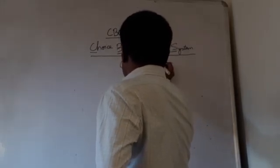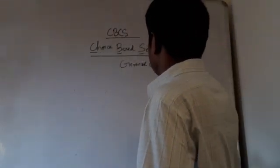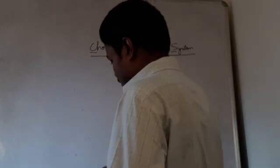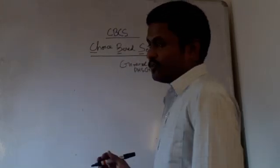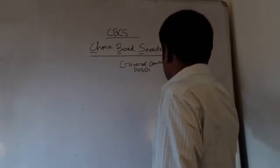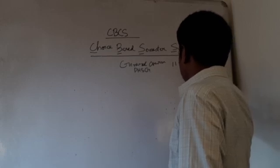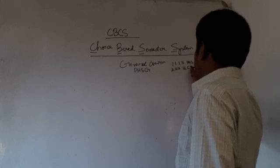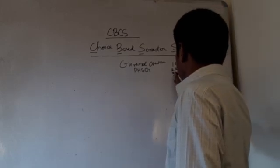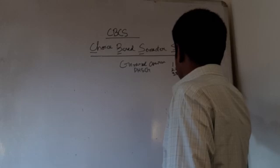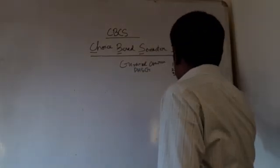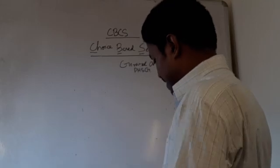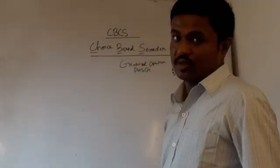The physics general course is denoted by the code PHSG, whereas the honors course is written as PHSA. There is also a number code for each subject: physics has the code 111 (PHS), chemistry has the code 222 (CEM), and mathematics has the code 333 (MTM). Now I'll move on to the different course structures for each semester.